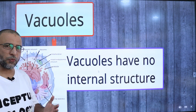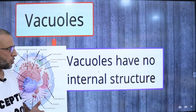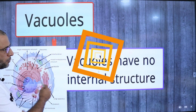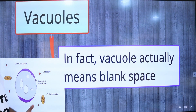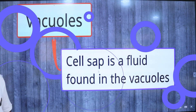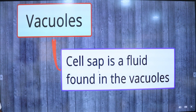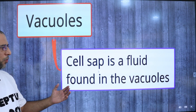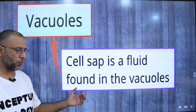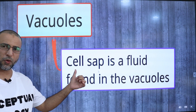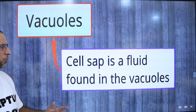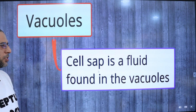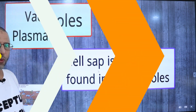Vacuoles have no internal structure. In fact, vacuole actually means blank space. Cell sap is a fluid found in the vacuole. The membrane of the vacuole is called tonoplast, and inside the tonoplast, cell sap is present.